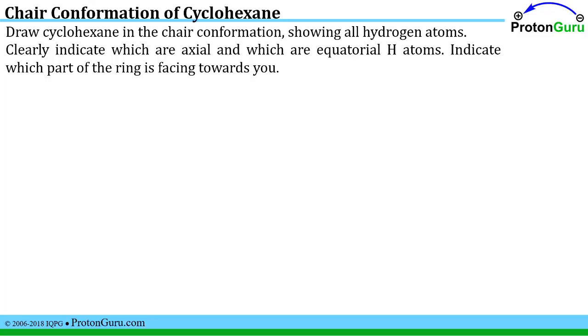We'll spend our first part of this video learning about drawing cyclohexane in the chair conformation, and by showing all the hydrogen atoms and indicating whether they are axial or equatorial, we will gain a great deal of knowledge on the shape of the cyclohexane ring. This will really help us do all the other types of problems much more easily.